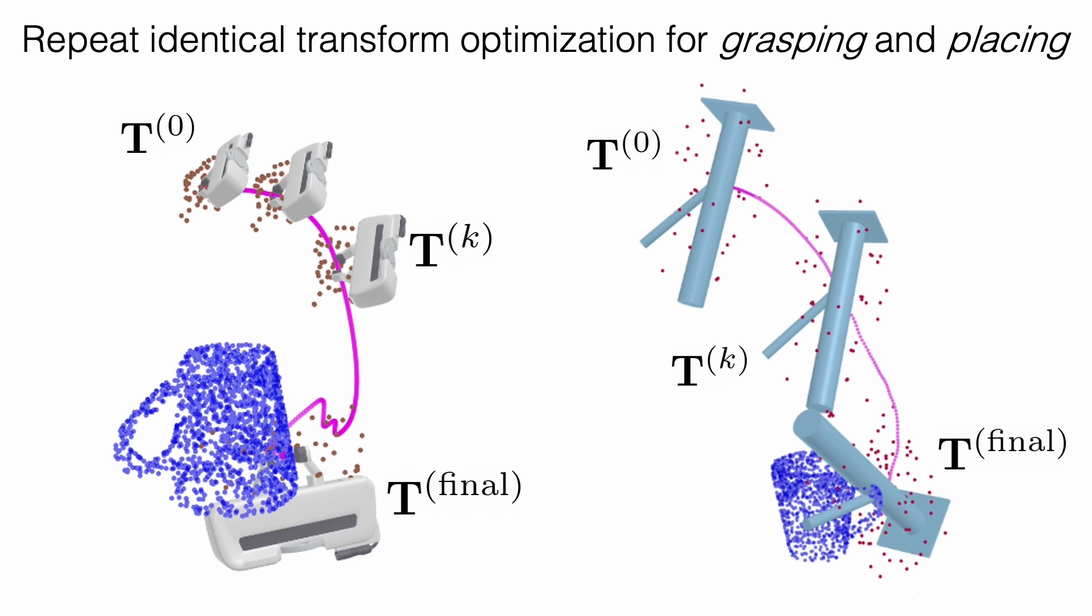Note that we can attach arbitrary external rigid objects to the query point set. Here we show this for both a gripper and a rack whose pose is optimized to obtain the relative configuration for hanging the mug. This is what allows us to achieve our goal of performing both picking and placing.